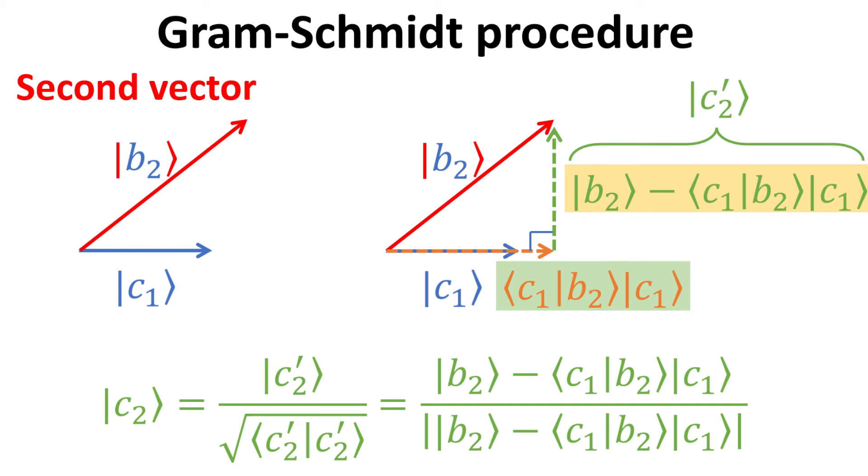This is best illustrated geometrically as shown. The component of B2 collinear with C1 can be obtained by projecting B2 onto C1, which is given by the inner product of the two vectors multiplied by C1 as shown in the green box. The component of B2 orthogonal to C1 is then B2 minus the component collinear with C1, which is B2 minus the quantity in the green box, as shown in the yellow box.